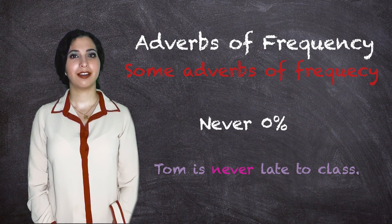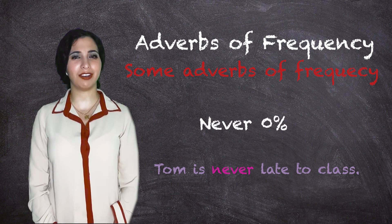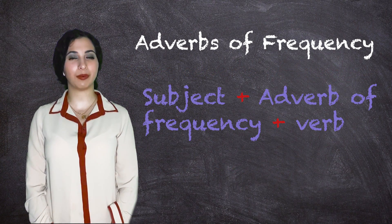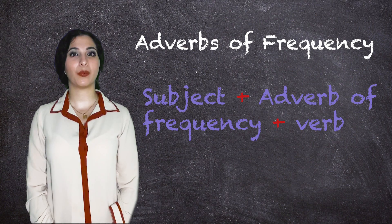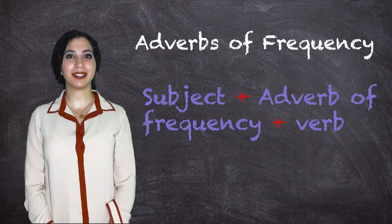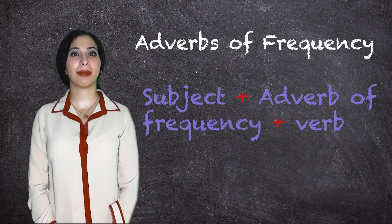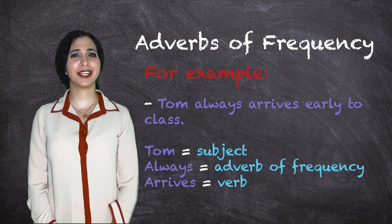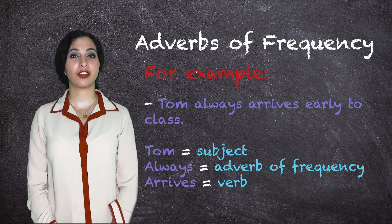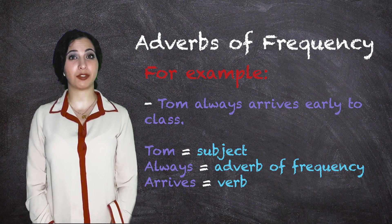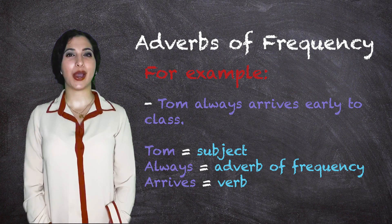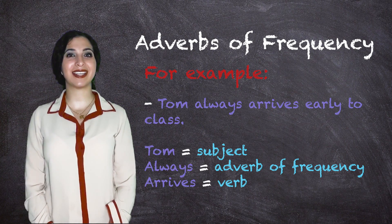Never is 0%. Tom is never late to class. When we want to use an adverb of frequency, we put the subject plus the adverb of frequency plus the verb. For example, Tom always arrives early to class. Tom is the subject, always is the adverb of frequency, arrives is the verb.